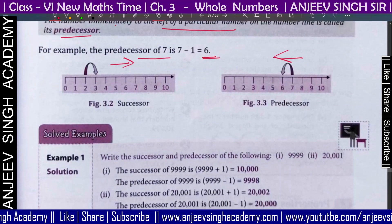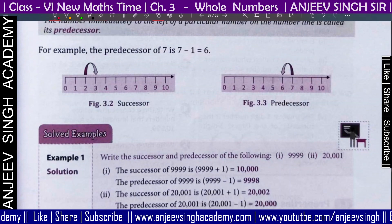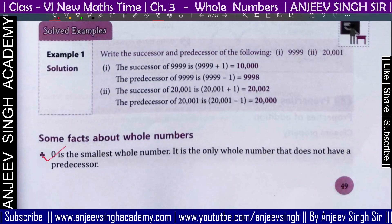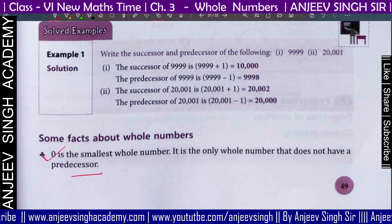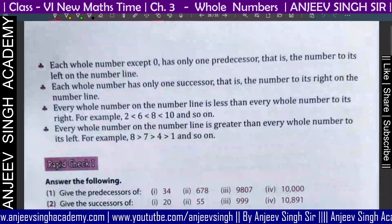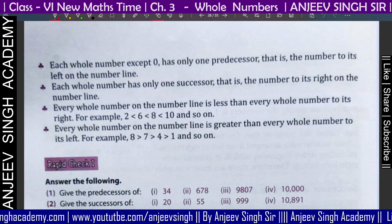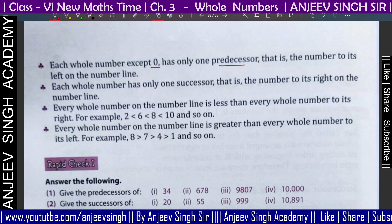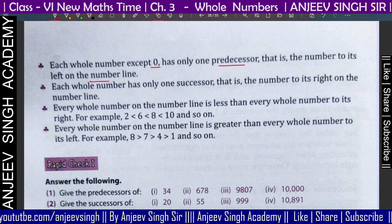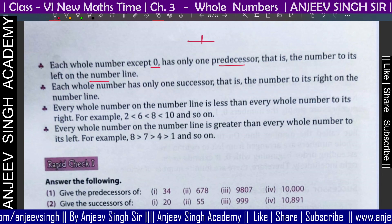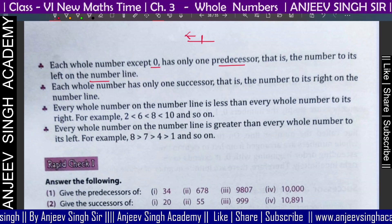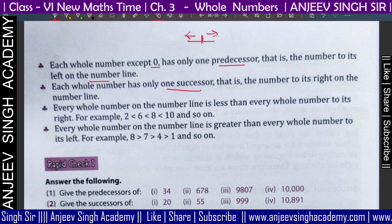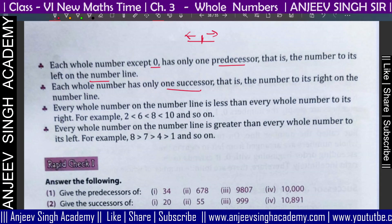Now there are some facts you need to know about whole numbers. First: zero is the smallest whole number — it is the only whole number that does not have a predecessor. Each whole number except zero has only one predecessor, which is the number to its left on the number line. Each whole number also has only one successor, the number to its right.